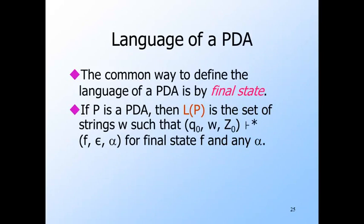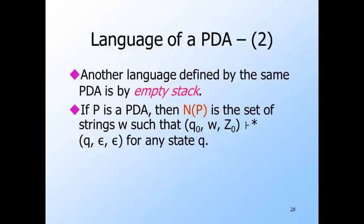The normal way to define the language of a PDA is by final state. That is, L(P), the language of a PDA P, is the set of strings W such that when P is started in its start state with W on the input and the start symbol on the stack, there is a sequence of moves that leads to an ID with a final state, with W completely consumed and anything on the stack. However, there is another way to define the language of a PDA, and this approach turns out to be rather useful, especially when we show how to convert PDAs to grammars and vice versa.